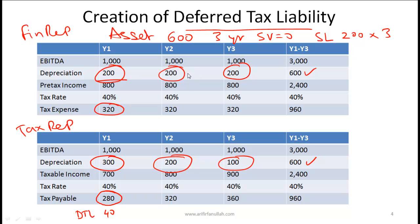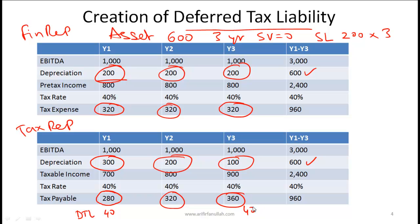In year two, the depreciation on the financial report and the tax report is the same, so tax expense and tax payable are the same. In year three, tax expense is still 320 but tax payable is 360, because depreciation of 100 on the tax report is less than the straight-line depreciation of 200 on the financial report — so taxable income on the tax report is higher. The deferred tax liability created in year one now gets reversed because that obligation becomes due in year three.